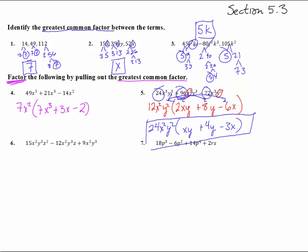Number 6. The coefficients 15, 12, and 9 are all multiples of 3. There's an x squared in all four terms, and y cubed in all terms as well. For z: there's z squared, z, and then no z — so we can't pull that out. Factoring out 3x²y³, we're left with 5z² minus 4z plus 3.